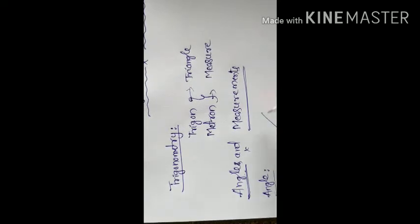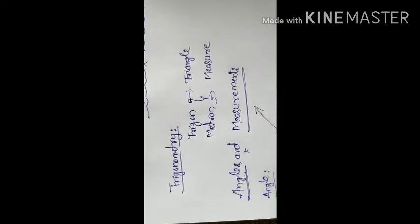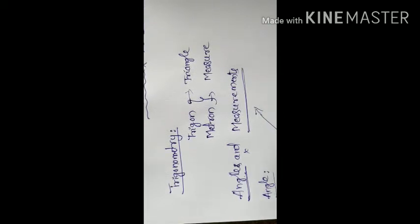This is one ray and this is another ray, sharing a common endpoint. These two rays are called the sides of the angle.